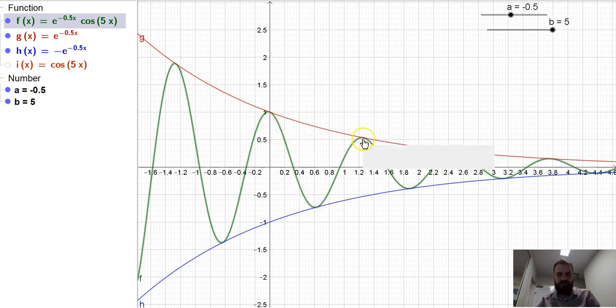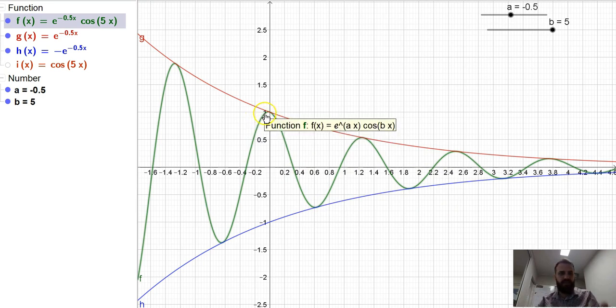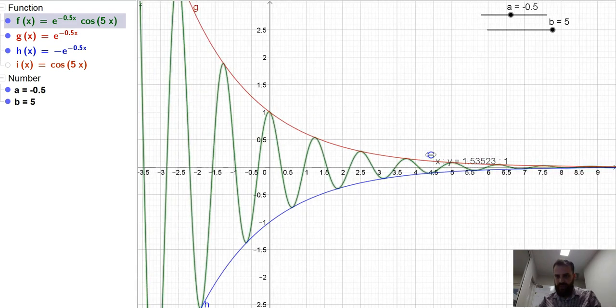peaking each time at either e to the ax or negative e to the ax, alternating between them. And it gets closer and closer and closer if we just sort of push across here.